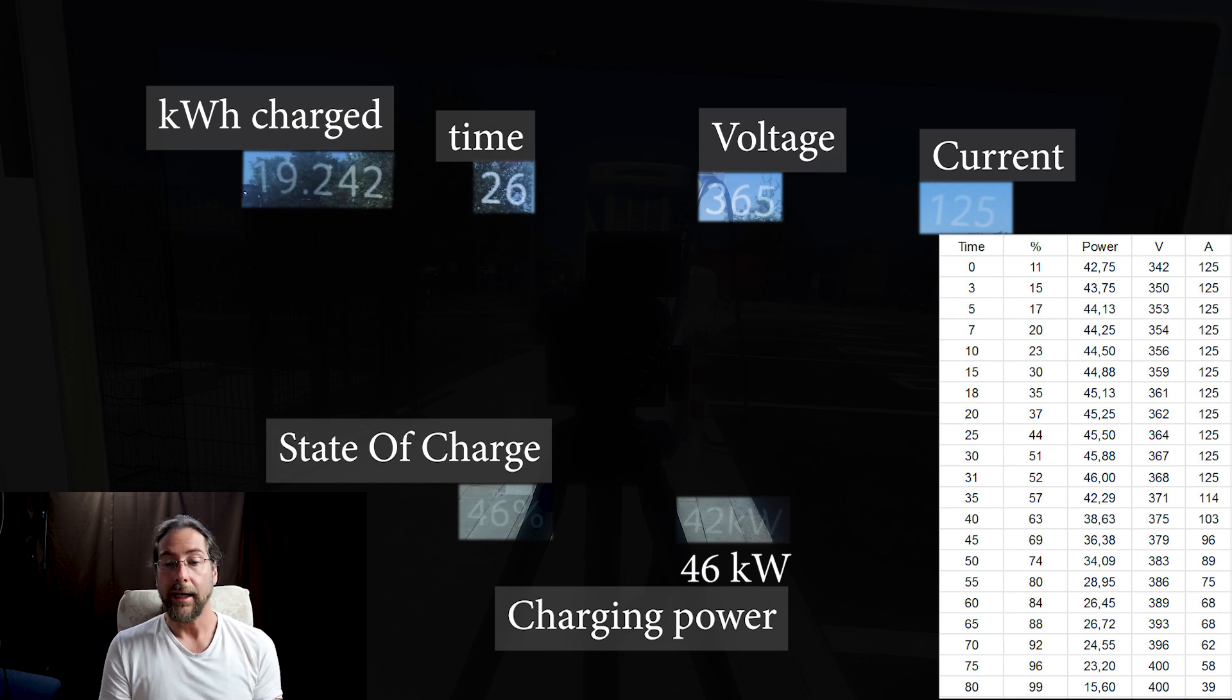Now we have 46 kilowatt and soon the Ionity charger will recognize that something's wrong. It will go from 42 to 46 and then back down again. At 30 minutes we have 22 kilowatt hours charged at 51 percent.